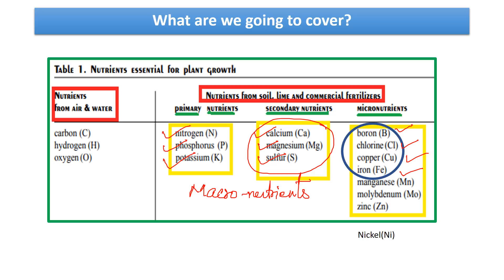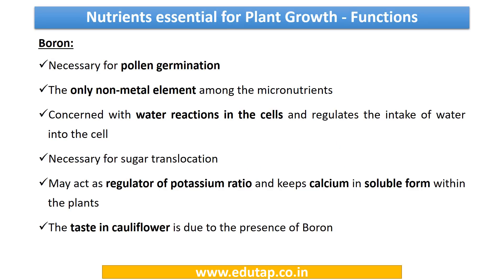These are micronutrients because they are required in smaller quantities, though they are actually very, very important. We shall first discuss the functions of the various micronutrients, and after we are done with the functions, we shall pick each one and see what the visual symptoms are in case of deficiency of that particular micronutrient. Then we shall solve five MCQs related to these four micronutrients.